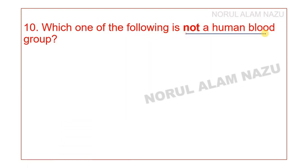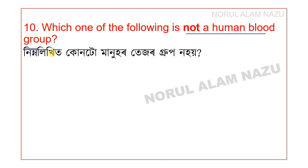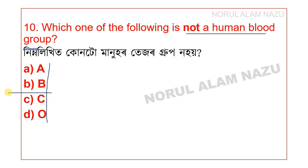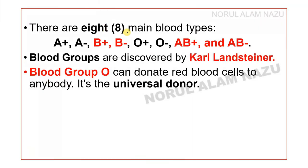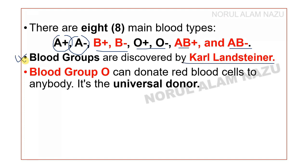Question 9: Which one of the following is not a human blood group? The options are A, B, C, and O. There are 8 main blood types: A positive, A negative, B positive, B negative, O positive, O negative, AB positive, and AB negative. Blood groups were discovered by Karl Landsteiner.